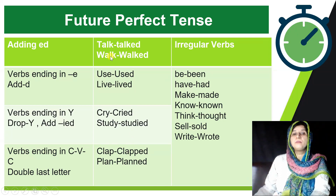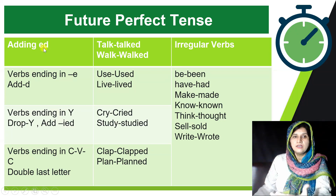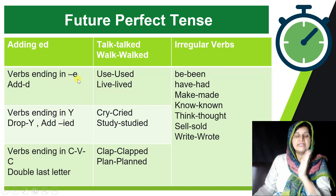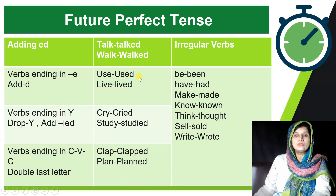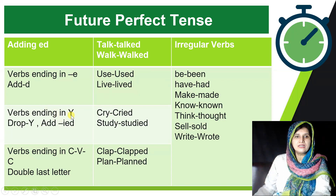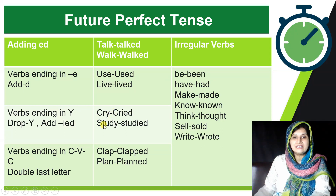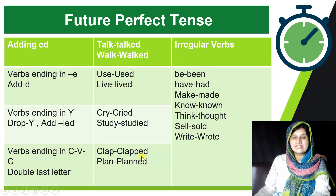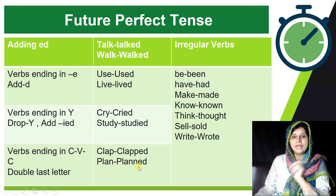Now let's see how to form the past participle. In most cases, add '-ed' to the base verb: talk → talked, walk → walked. If the verb already ends in 'e,' just add 'd': use → used, live → lived. For verbs ending in 'y,' drop the 'y' and add '-ied': cry → cried, study → studied. For verbs ending in a consonant-vowel-consonant pattern, double the last letter: clap → clapped, plan → planned.